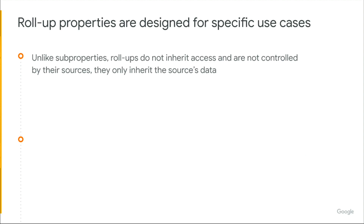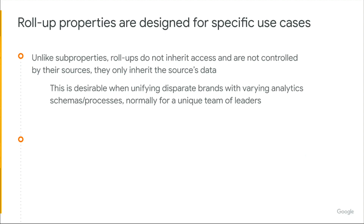Roll-up properties were designed for that specific use case of rolling up data together, but they were not designed specifically for governance. So there is no governing control between a roll-up and its source properties. You will not be able to push configuration from a roll-up or push events from a roll-up into source properties. Data actually flows from source properties into the roll-up, and likewise, source properties have no control over the roll-up. This is really an independent property built for a special team of people that are able to look across a portfolio of brands or ordinary properties.